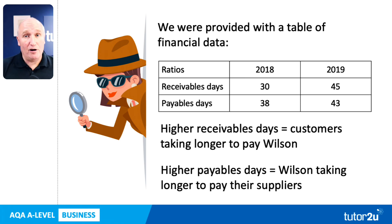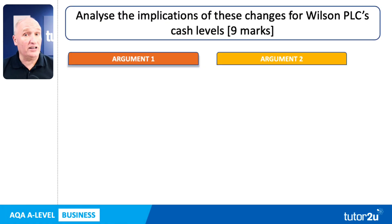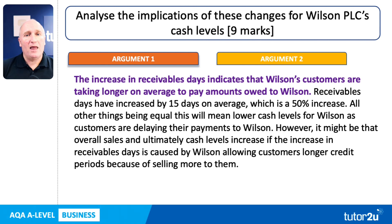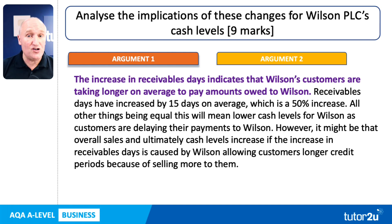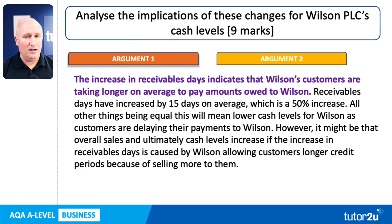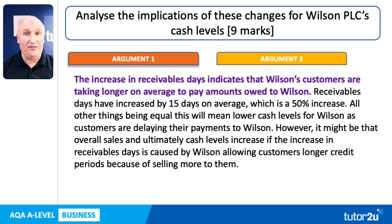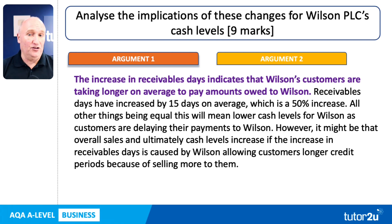All we need to do in our response is provide the examiner with a simple analysis in context, using that information to explain the potential impacts on cash levels. Dealing with receivables first: the increase in receivables days indicates that Wilson's customers are taking longer on average to pay amounts owed to Wilson. Receivables days have increased by 15 days on average, which is a 50% increase. All other things being equal, this will mean lower cash levels for Wilson as customers are delaying their payments.